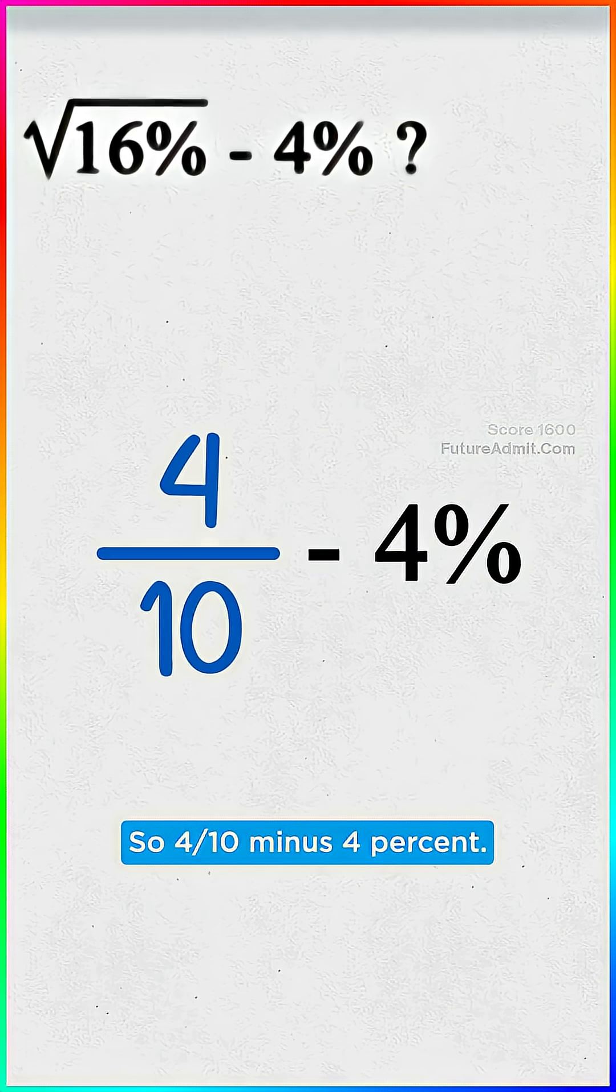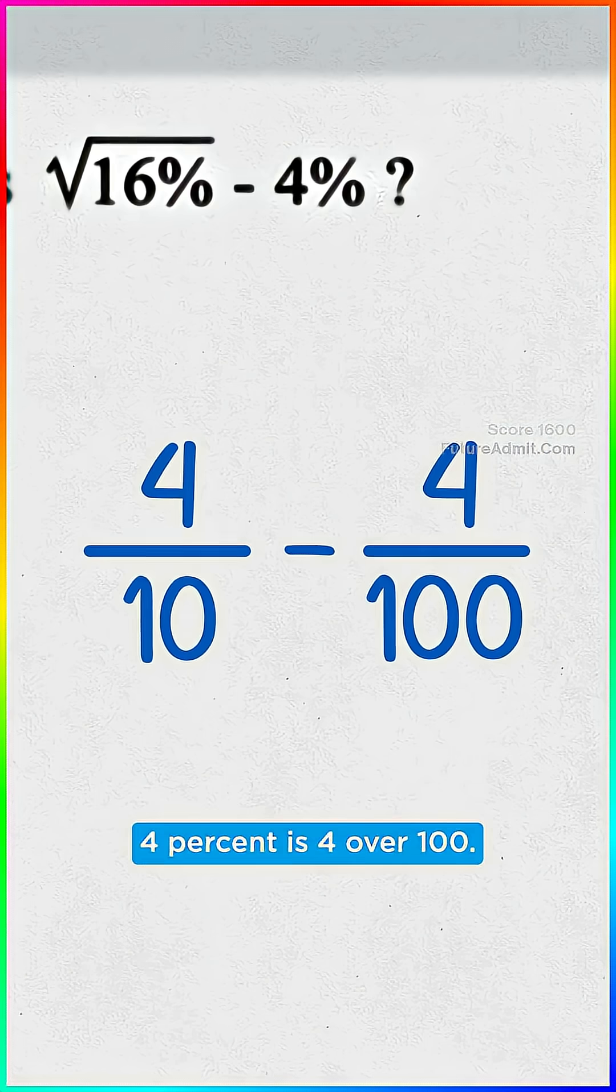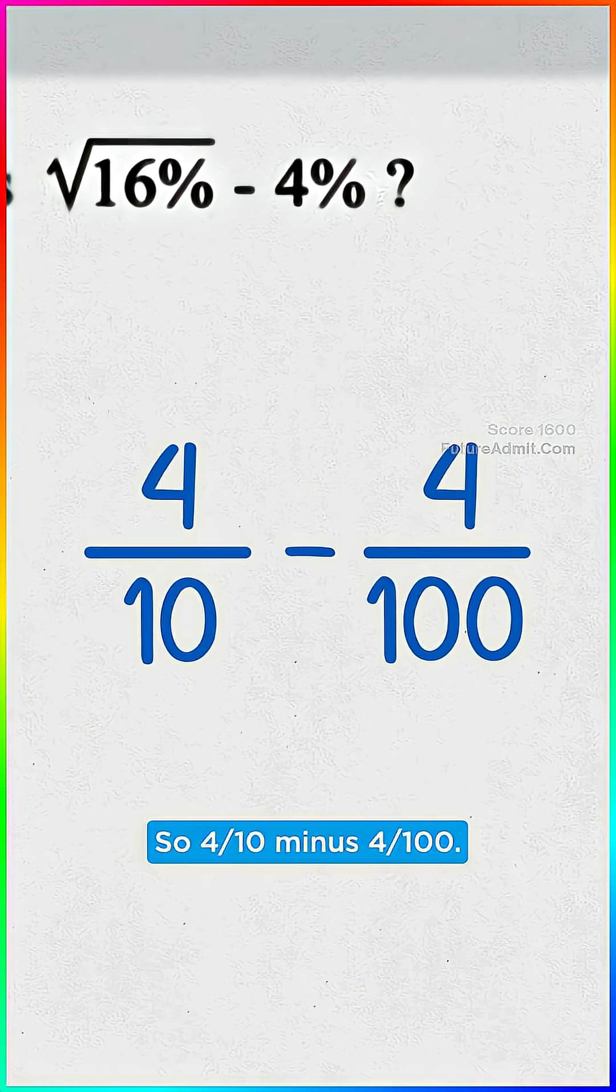So four tenths minus four percent. Now let's get rid of that percent again. Four percent is four over 100. So four tenths minus four one hundredths.